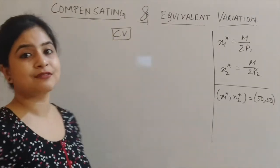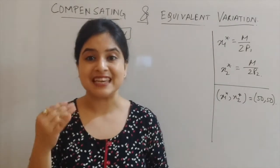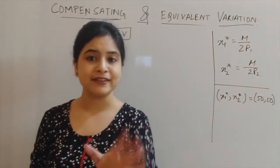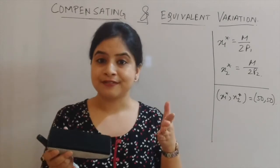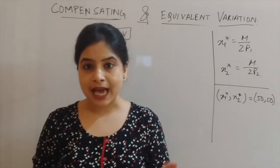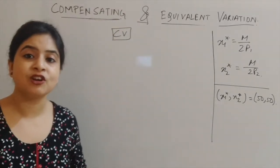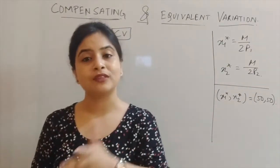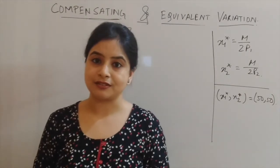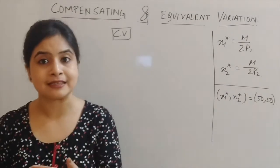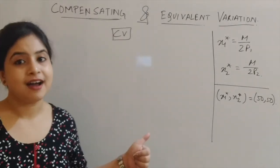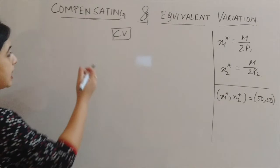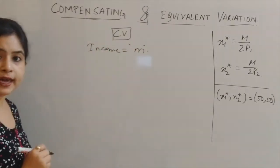Starting with compensating variation. There is a price increase in one of the commodities, specifically x1. Compensating variation asks: in the final scenario, how much money do we need to give the consumer to maintain their utility level constant or unchanged? In other words, compensating variation represents the willingness to accept. We will take the income under compensating variation as small m.